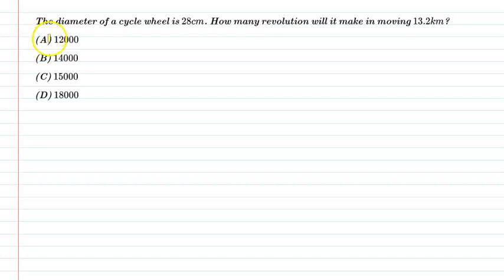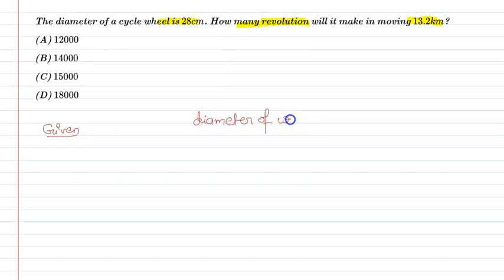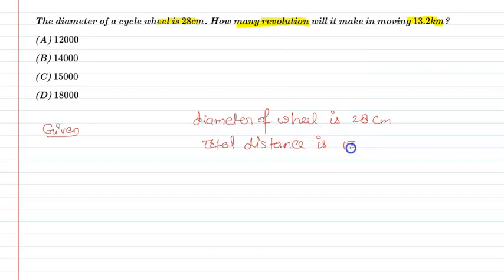Hello students, let us understand the following question. The question says: the diameter of a cycle wheel is 28 cm. How many revolutions will it make in moving 13.2 km? Given information: diameter of the cycle wheel is 28 cm and total distance covered is 13.2 km. Let us move on to the solution part.